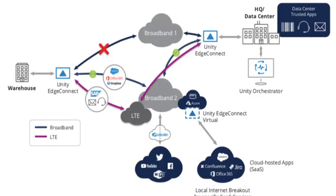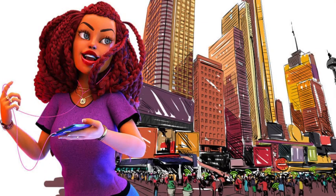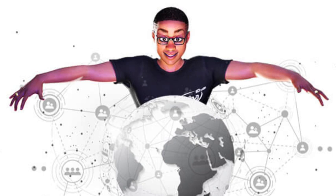An SD-WAN gateway or endpoint has the ability to have an MPLS connection, an LTE connection, and a broadband connection, which ensures business continuity in case one of the links fails. For example, if you are on a call and there is a fiber cut from your provider, SD-WAN will automatically hand over the traffic from your voice call to the LTE connection, and your call will not be interrupted.